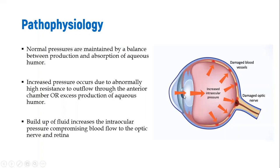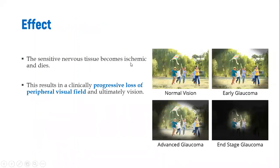What determines intraocular pressure is the flow of aqueous humor, which is produced from the ciliary body and drained through the trabecular meshwork. When there is excess production of aqueous humor more than is being drained, or there is a blockage in the drainage, there will be a buildup of aqueous humor and therefore increased pressure. This pressure presses on the optic nerve and the surrounding blood vessels, leading to ischemia and necrosis of nerves around the retina, resulting in progressive loss of peripheral and ultimately central vision.